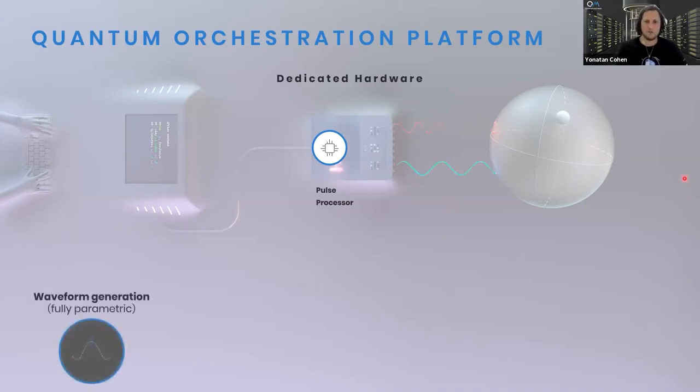The processor combines four elements that must be involved in every quantum control protocol. First is waveform generation - generating pulses that perform operations on the quantum system. This includes not only generating waveforms but also shaping them in real time and changing parameters: amplitudes, frequencies, phases, stretching pulses, chirping frequencies.